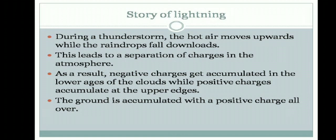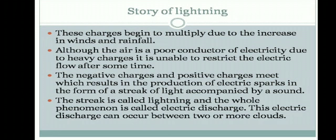The ground is accumulated with positive charge all over. These charges begin to multiply, and due to the heavy charges, the negative charges and positive charges meet, which results in the production of electric sparks. That electric spark in the form of light, accompanied by a sound, is lightning along with thunder. This streak is called lightning and the whole phenomenon is called electric discharge.